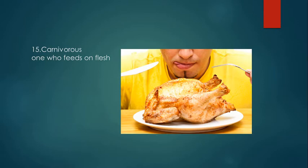Carnivorous means one who feeds on flesh. Herbivores eat herbs and plants, while carnivorous animals eat flesh — like a lion or tiger who only eats flesh, not plants.